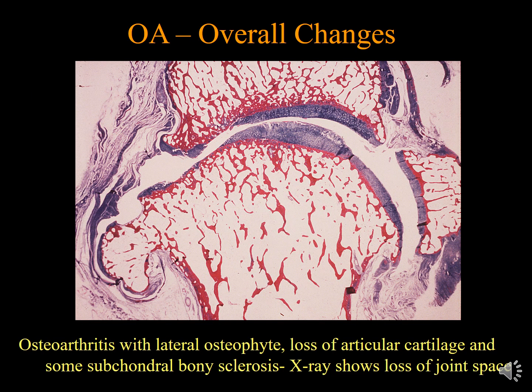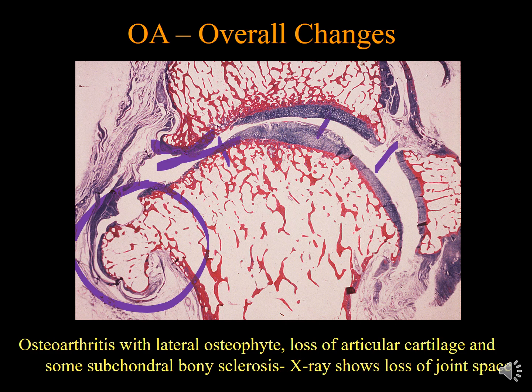Overall changes occurring in the joint with Osteoarthritis include lateral osteophytes, loss of articular cartilage with defects on the surface, subchondral bone sclerosis occurring at the subchondral bone, and loss of joint space — the joint space becomes narrowed. These are the overall changes in Osteoarthritis.